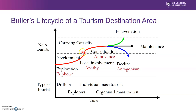When a destination hits carrying capacity, there are a couple of different ways they can continue to progress. Either they consolidate what they have and continue on this path, operating relatively well, and they move into what we call maintenance — they decide they're not going to accommodate any more people, not going to build any more hotels, just maintain this level of guests and continue on this path.